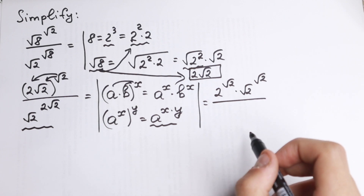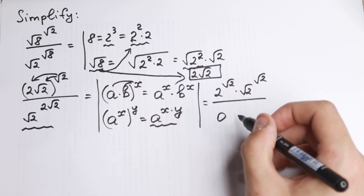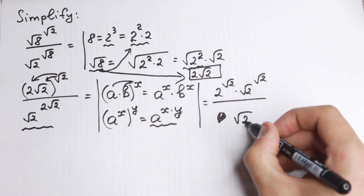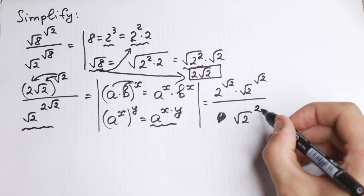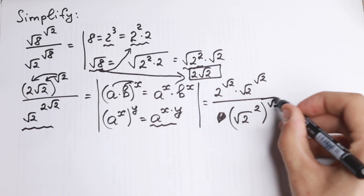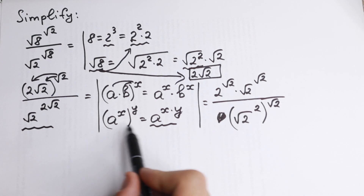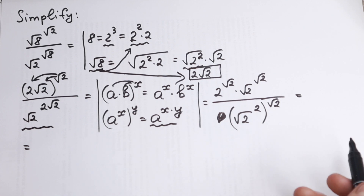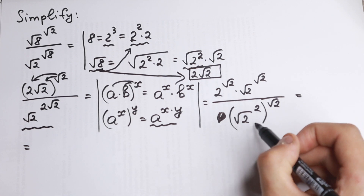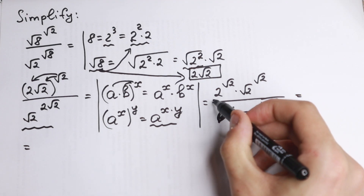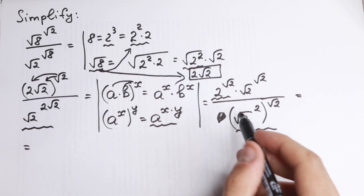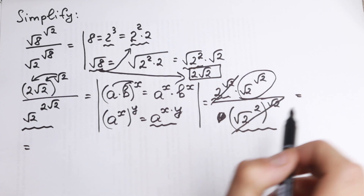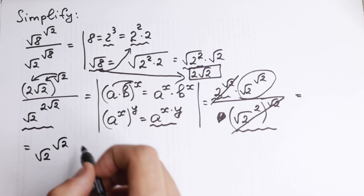In the denominator, using the second rule, we have square root of 2 to the power 2, raised to the power square root of 2. Now, square root of 2 squared equals 2, so this becomes 2 to the power square root of 2. This element in the denominator is the same as the 2 to the power square root of 2 in the numerator, so we can cancel them. As a result, we are left with square root of 2 to the power square root of 2.